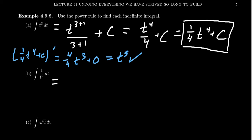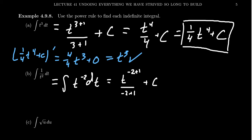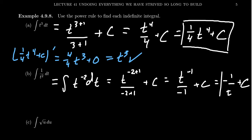For the next one, to apply the power rule we have to view this as a power function. We take the integral of t to the negative two — that's what one over t squared is, since reciprocals mean negative powers. By the anti-power rule, we increase the exponent by one and divide by this new exponent, and don't forget the plus c. We get t to the negative one over negative one plus a constant, which simplifies to negative one over t plus an arbitrary constant.